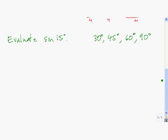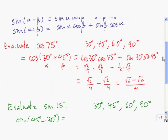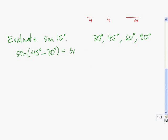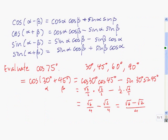Once again, the angles we have to work with are 30, 45, 60, and 90. So we have to figure out how to combine two of these to get 15. 15 degrees is equal to 45 degrees minus 30 degrees, so that's how we're going to rewrite this. Then we're going to use the difference identity for sine to expand this. For sine, we take sine of the first times cosine of the second — sine of 45 degrees times cosine of 30 degrees. We're using the difference identity for sine, which is the third one.